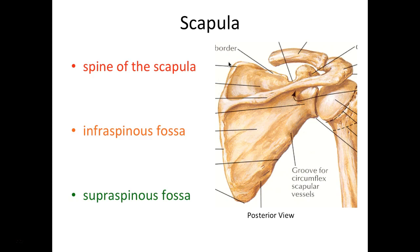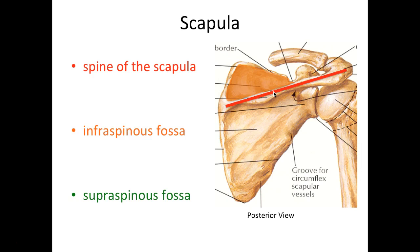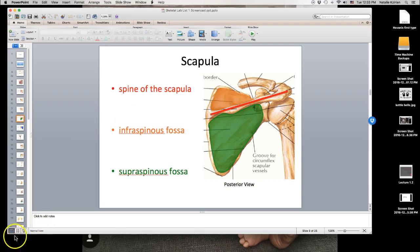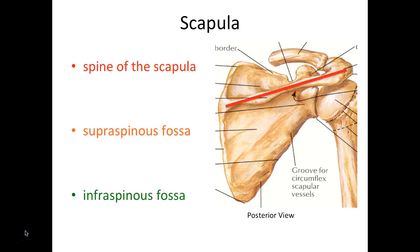Now we're looking at the scapula in a posterior view. If you feel your shoulder blade on the upper third, you're going to feel the spine of the scapula all along in here, and that really divides out two depressions. So that spine of the scapula — if you feel above that ridge, you are going to feel your supraspinous fossa. Add fossa to that terminology list.